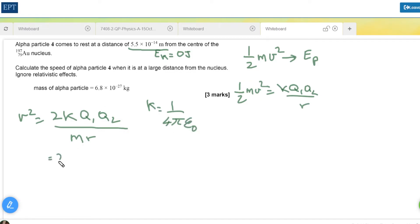v squared is equal to 2 times 2 times 1.6 times 10 to the minus 19, that's the charge on the alpha particle, times the charge on the gold nucleus which is 79 times 1.6 times 10 to the minus 19.